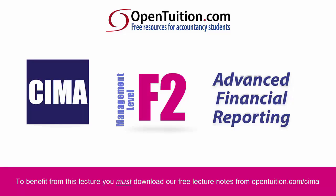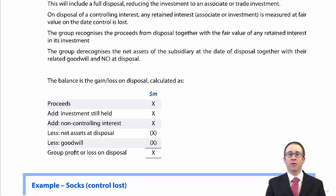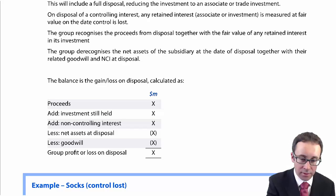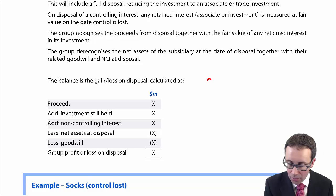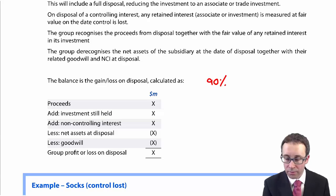This is a lecture from Open Tuition. To benefit from the lecture, you should download the free lecture notes from OpenTuition.com. The first of our step disposals that we're going to look at is whereby we lose control of the subsidiary.